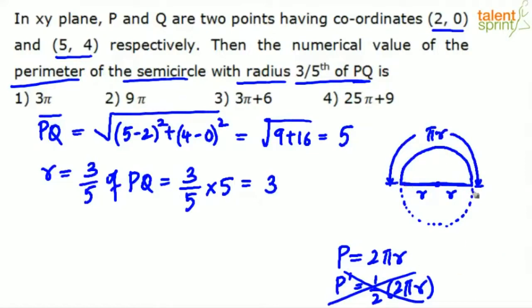But perimeter is the boundary, length of the boundary. So we have half of that circular boundary, and then there is this straight line, which is the diameter, 2r. So the perimeter of a semicircle will be πr + 2r.